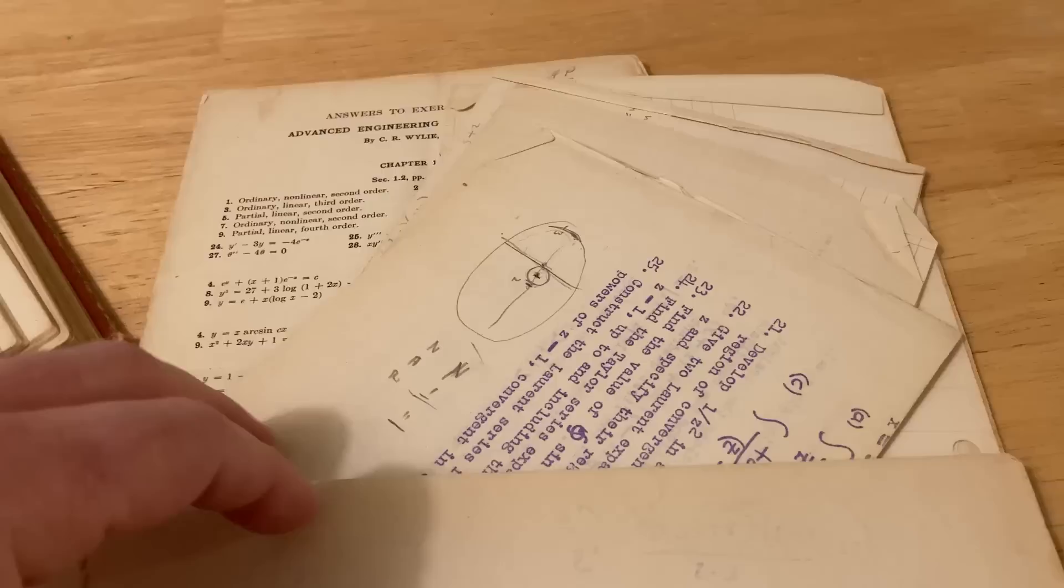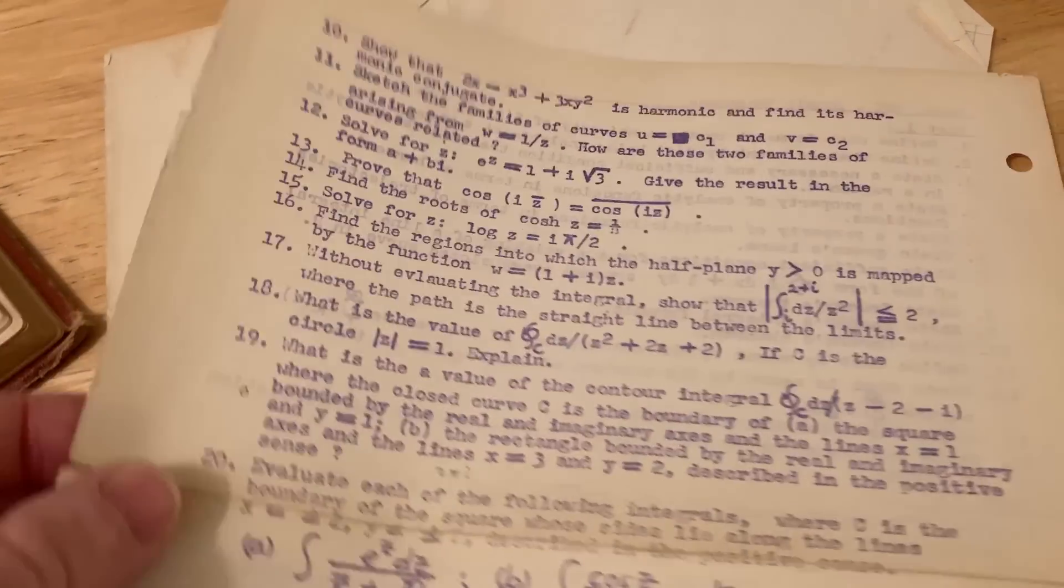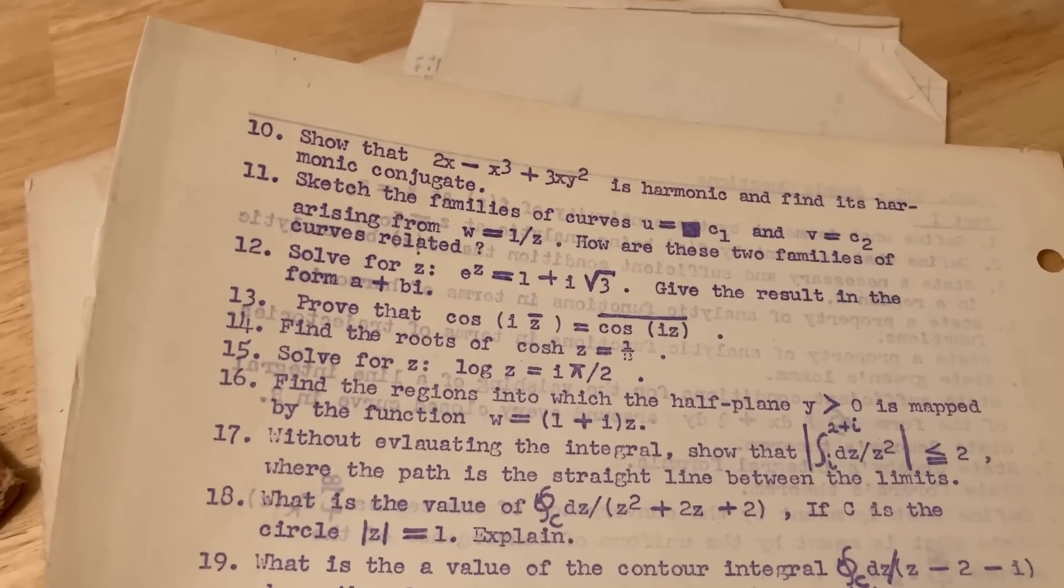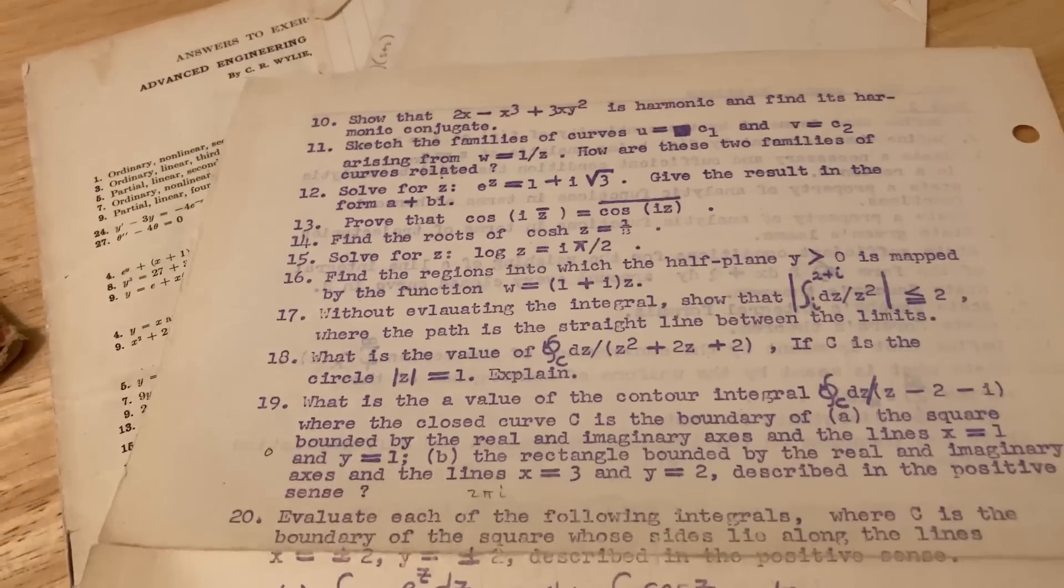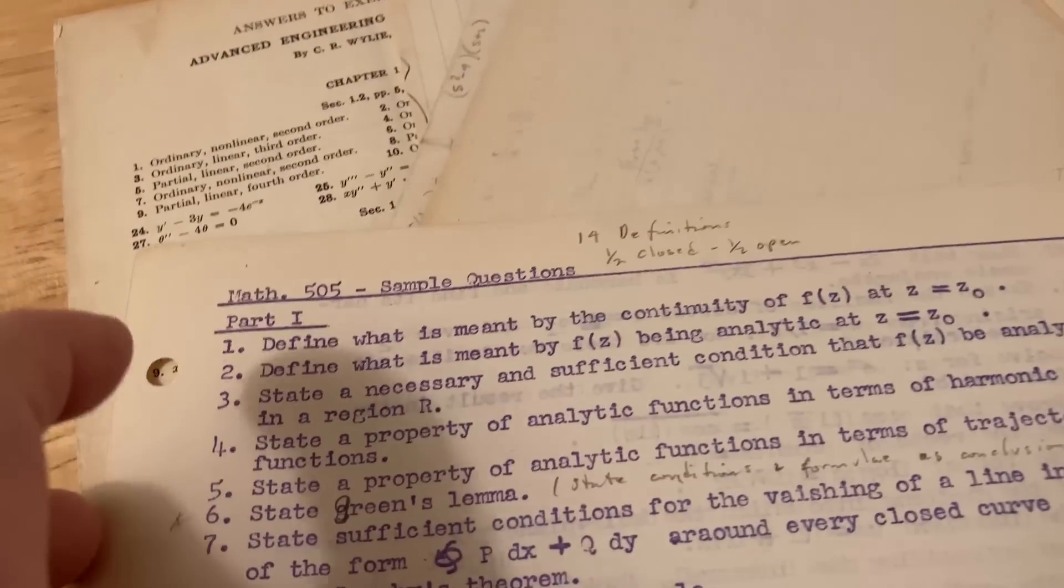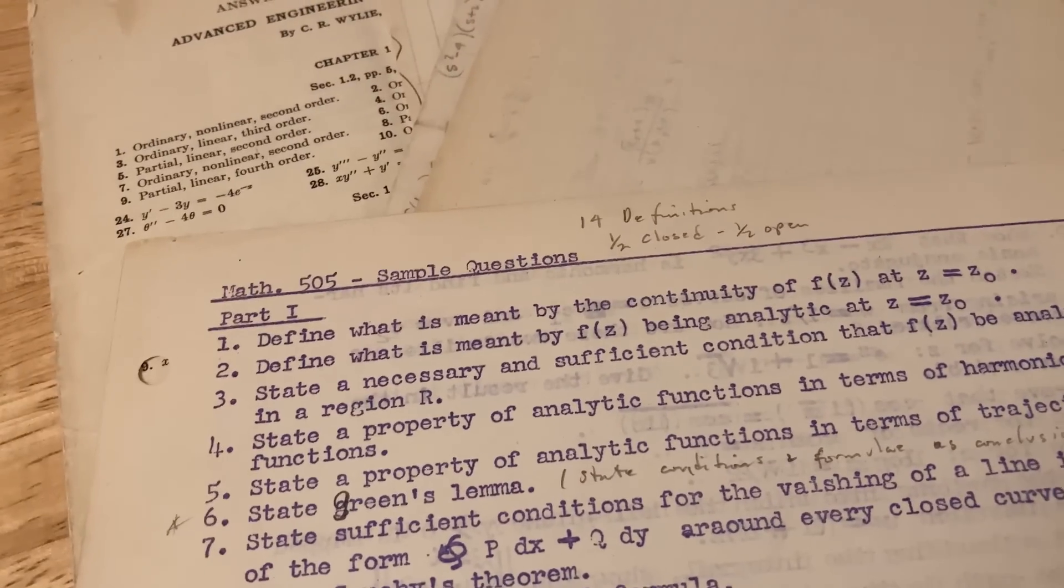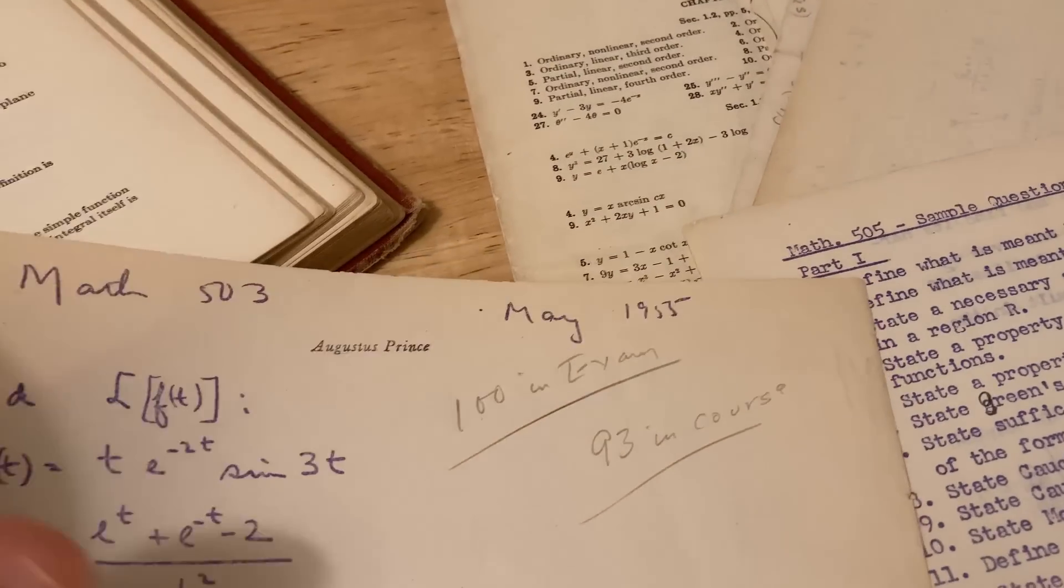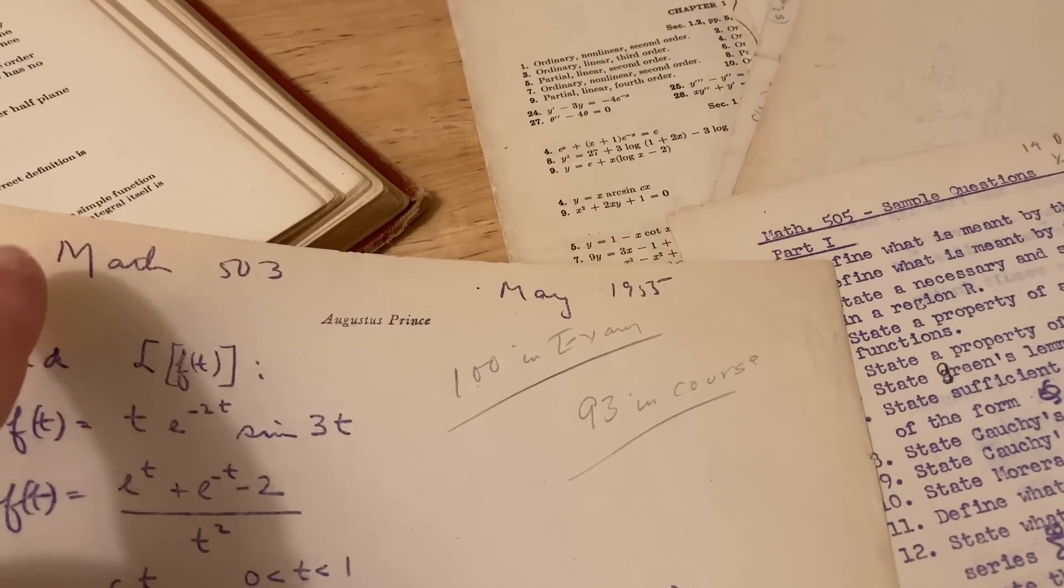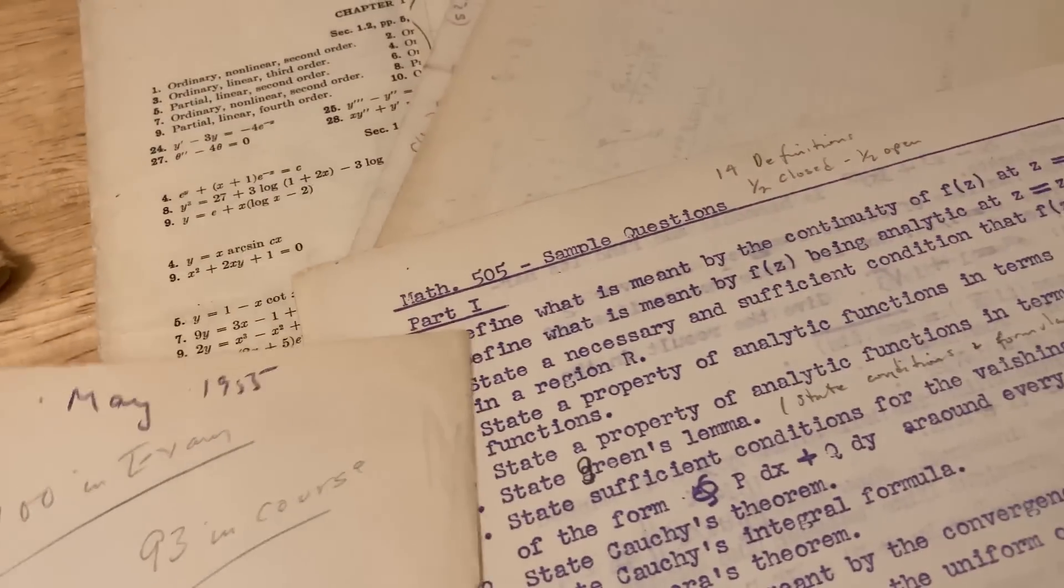This piece of paper has some really interesting typesetting - a certain type they used to use back in the day. These are practice problems. Math 505 sample questions, whereas the exam was Math 503. So it looks like this book was used for two courses, Math 503 and Math 505.